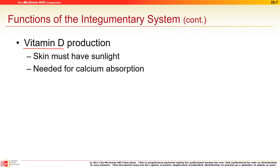Cholesterol in your skin reacts with UV light to create the precursors for Vitamin D. Those precursors are made in your skin and then go to the liver for final production. You do need some sunlight exposure. You can't absorb calcium without Vitamin D — that's why the milk we buy from grocery stores has Vitamin D added.